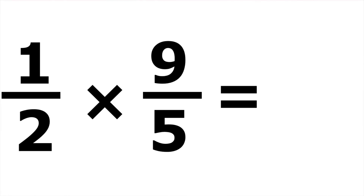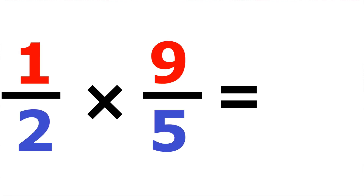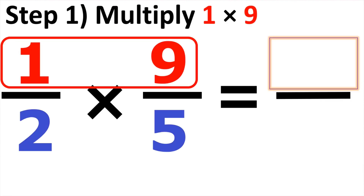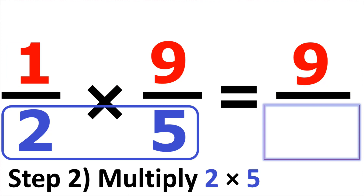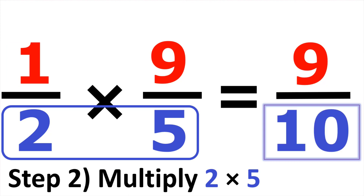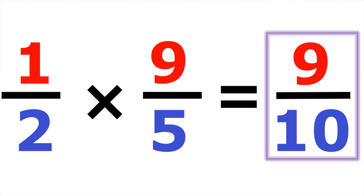Example number six, we have one-half times nine over five. Multiplying straight across starting from the numerator, we have one times nine, which gives us nine. Now we look at the denominator: two times five is equal to ten. So the answer is nine over ten.